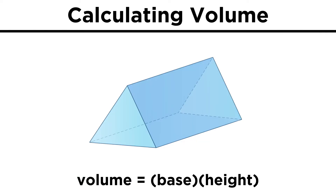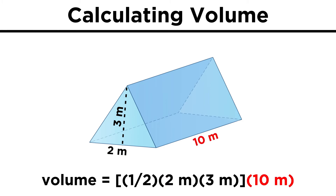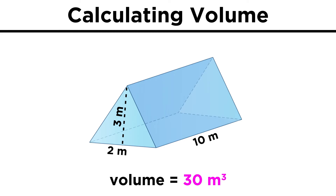This works for any type of prism, like a triangular prism. Here we have triangular bases, so we just get the area of one base and multiply by the height. If the triangle itself has a base and height of two and three meters, and the prism has a height of ten meters, we get one-half times two times three times ten, or thirty cubic meters.